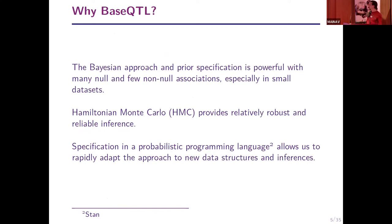Why use this approach? The Bayesian approach and prior specification are powerful when you have many null and few non-null associations, especially in small datasets. Hamiltonian Monte Carlo provides relatively robust and reliable inference compared to methods like Metropolis-Hastings. The specification in a probabilistic programming language — Stan — allows rapid adaptation of the model to new data structures. However, Hamiltonian Monte Carlo is slow, and for big data with genotypes, this computationally intensive approach may not be feasible or even necessary, and it's not currently feasible to do a genome-wide study.